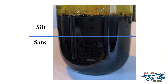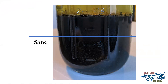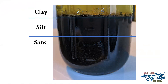Now that we've identified sand and silt, the last layer is clay. Clay is a very thin layer in my soil sample, but you can tell it's distinct. You can see that the layer across the top is just a bit lighter than the silt layer beneath it — that's how I know it's clay, and it makes up about five percent of my soil sample.